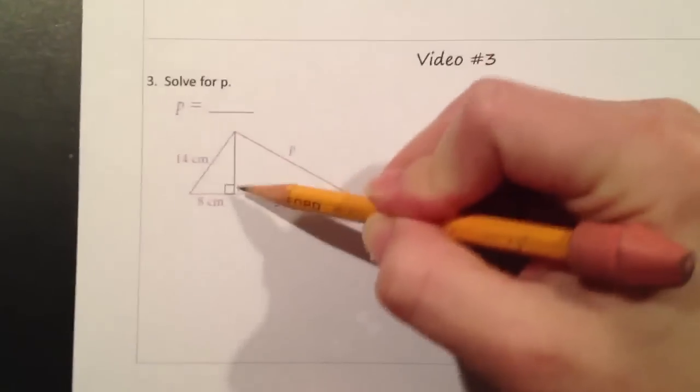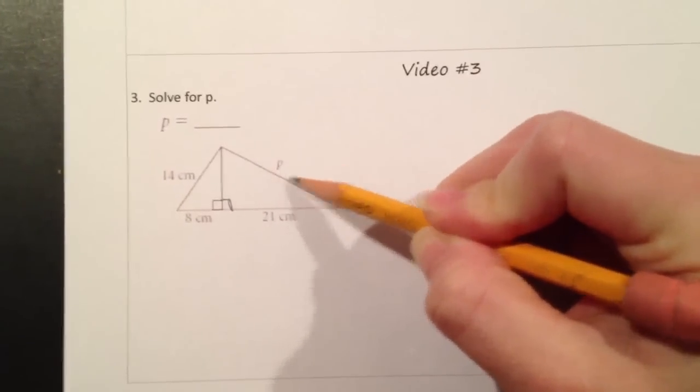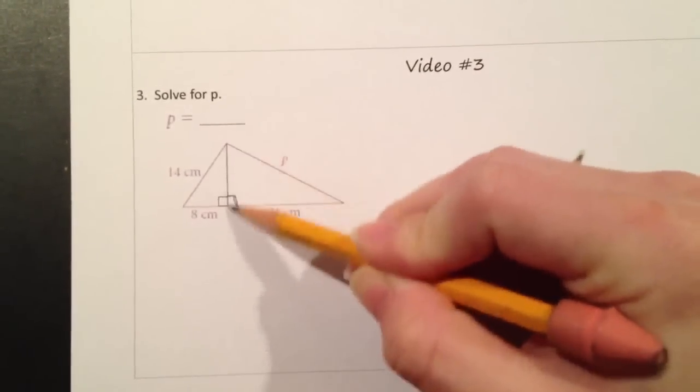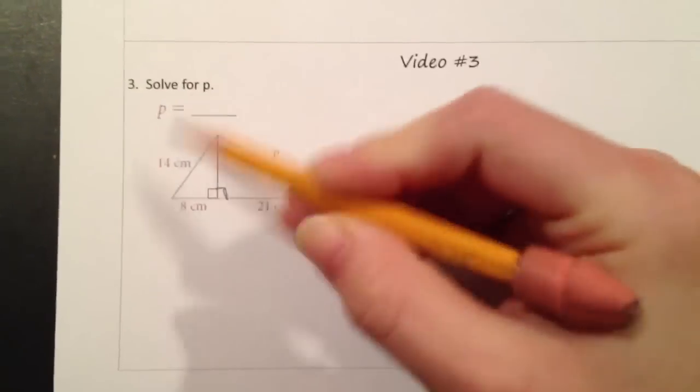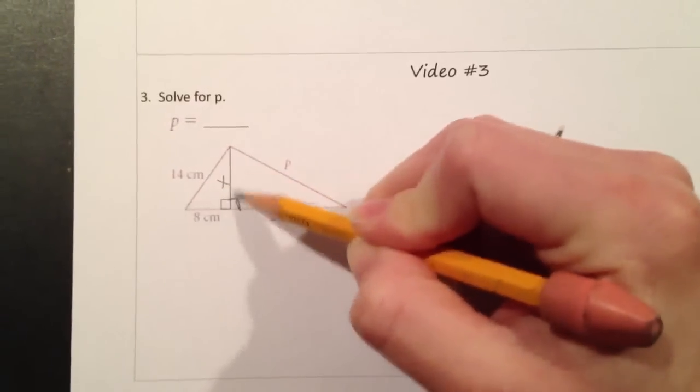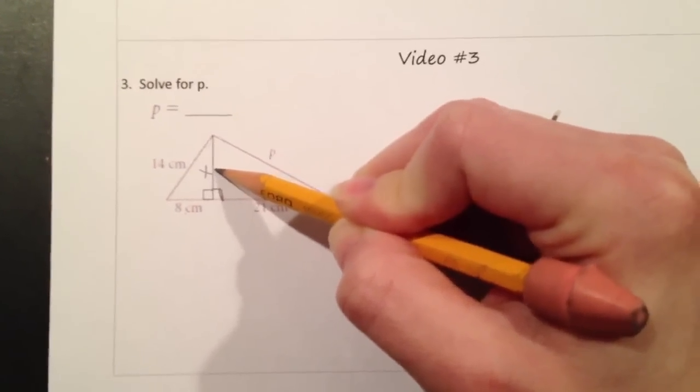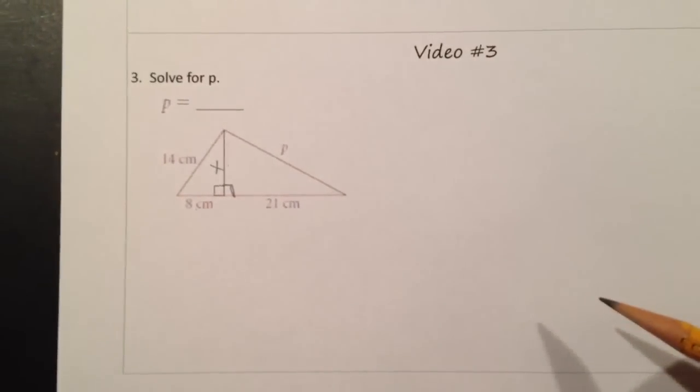We actually have two right triangles here. Our goal in this problem is to solve for P. But in order to solve for P, which is the hypotenuse of this right triangle on the right-hand side, we actually have to solve for this leg of the right triangle that's formed here using the 8 centimeters as one leg, x as another leg, and 14 centimeters as the hypotenuse.